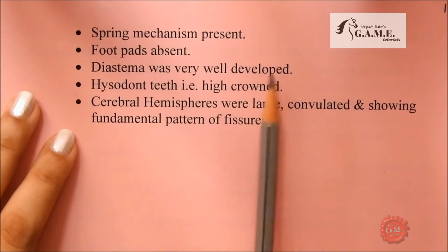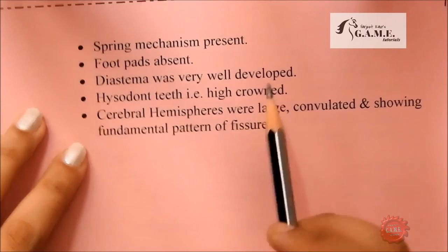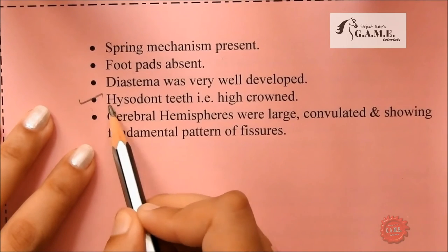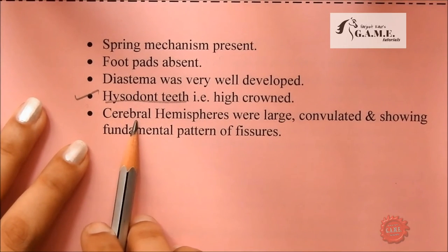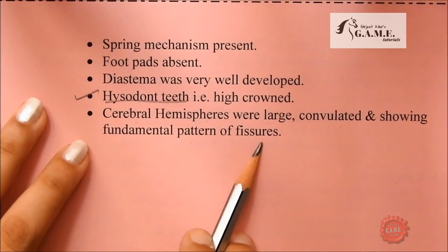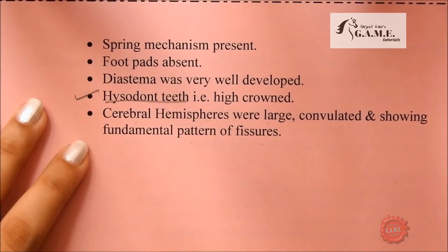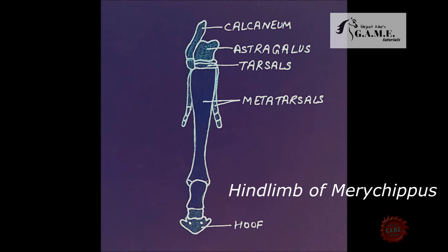Merychippus had hypsodont dentition — high-crowned teeth. Cerebral hemispheres were large, convoluted, and showing a fundamental pattern of fissures. You can see the forelimb of Merychippus here with the hoof clearly visible on the third digit, and similarly the hind limb of Merychippus also showing the hoof.